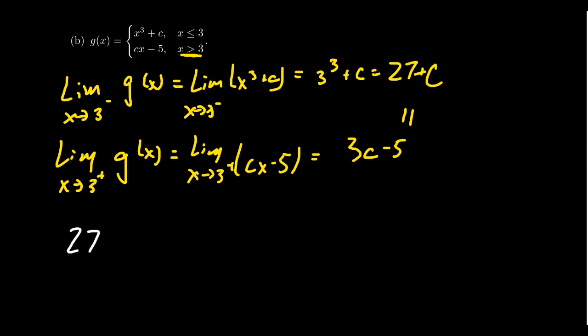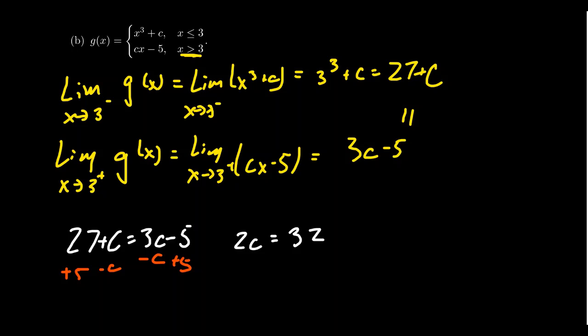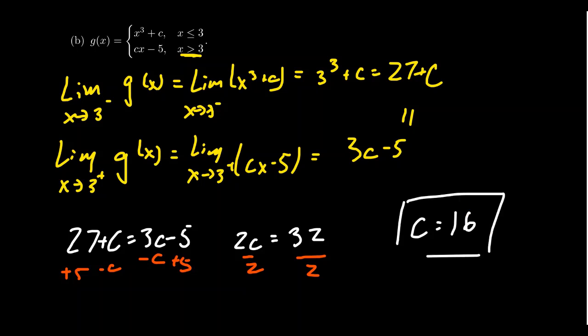We need to equate these things: 27 plus c equals 3c minus five. Subtracting c from both sides and adding five to both sides, we get 32 equals 2c. Dividing both sides by two, we end up with c equals 16. That is the one value that will make the two parts touch each other, just as we predicted with Desmos. It wasn't an approximation — 16 was the exact value.